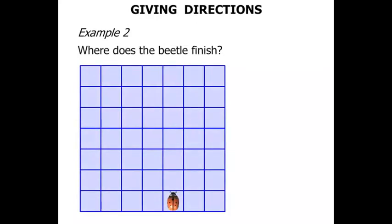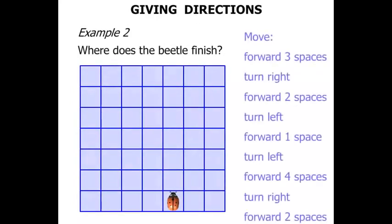Example 2. Where does the beetle finish? These are the directions. A few more directions. And the beetle is actually facing a direction. Okay, so let's see a little bit different here. A, B, C, D, E, F or G. It's going to finish on one of those.